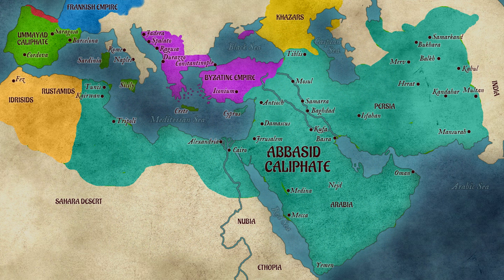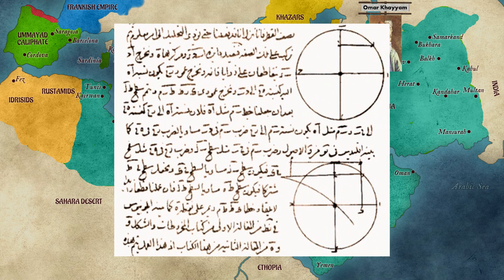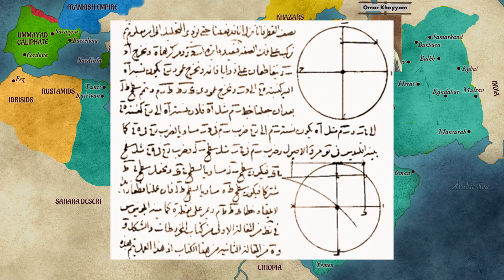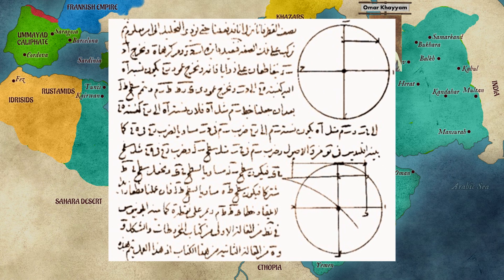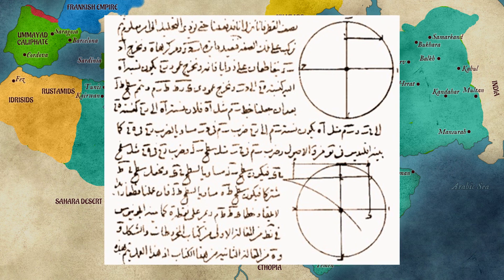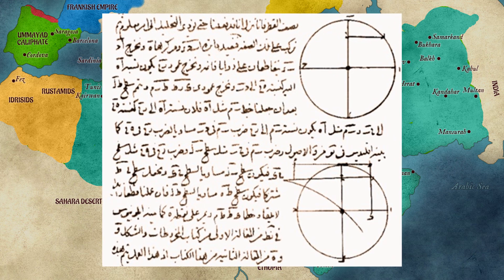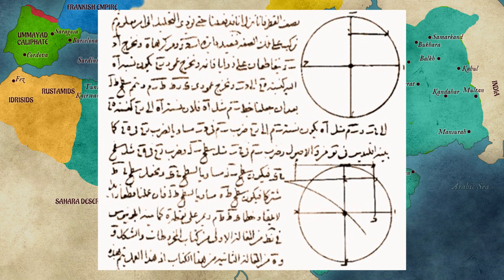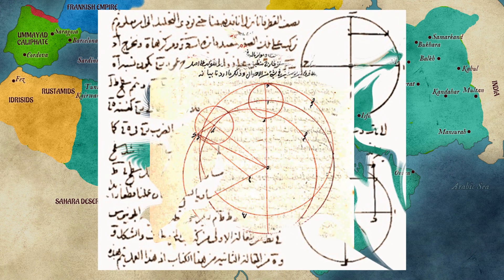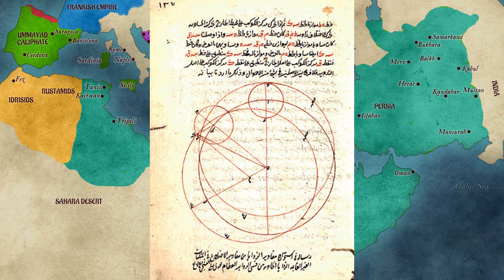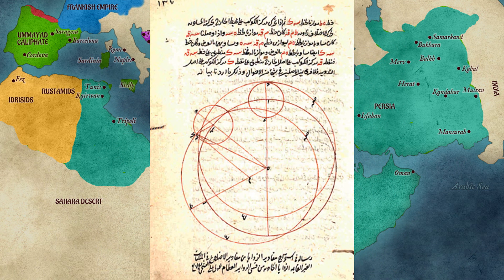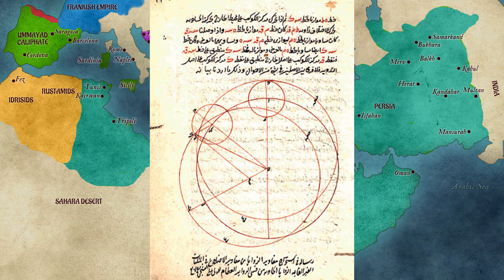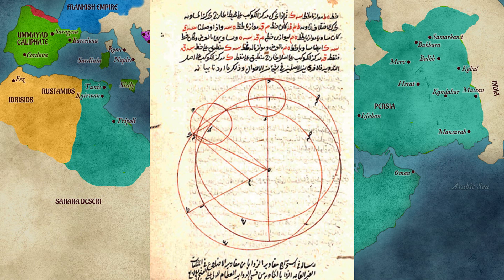The final mathematician I will talk about is Omar Khayyam, who was also a famous poet. He was the first to introduce algebra into geometry. His works contain a complete classification of linear, quadratic and cubic equations with positive roots, and he developed a systematic attempt to solve cubic equations.